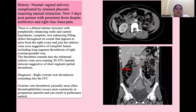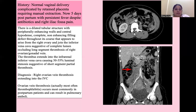Next is a case of a normal vaginal delivery complicated by retained placenta requiring manual extraction, now 5 days postpartum with persistent fever despite antibiotics and right iliac fossa pain. There is a dilated tubular structure with peripherally enhancing walls and a central hypodense non-enhancing filling defect throughout, arising from the right ovary and joining the inferior vena cava — suggestive of complete lumen-occluding long-segment thrombosis of the right ovarian/gonadal vein. The thrombosis extends into the infrahepatic inferior vena cava causing 50–55% luminal stenosis. Ovarian vein thrombosis most commonly occurs in postpartum patients and can result in pulmonary emboli.